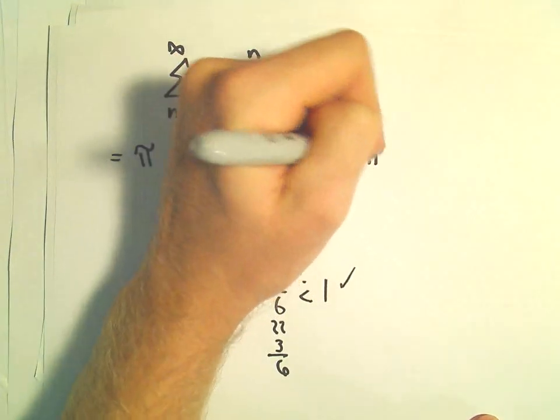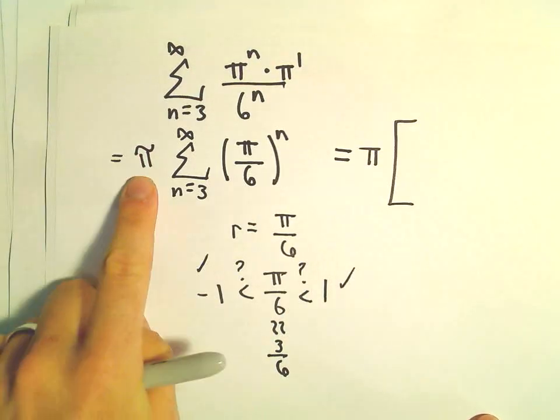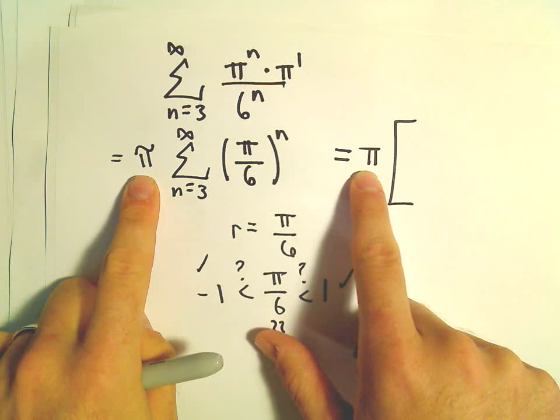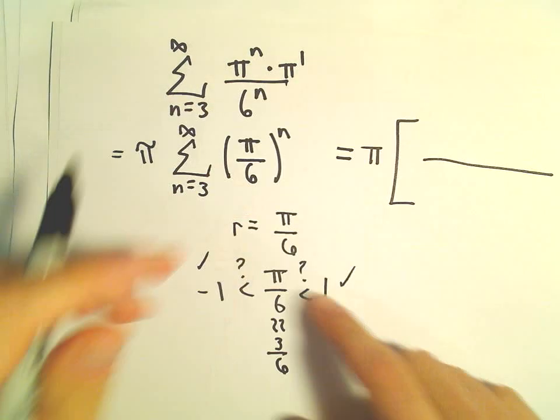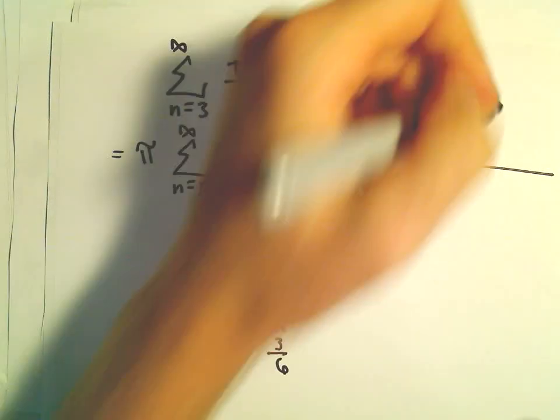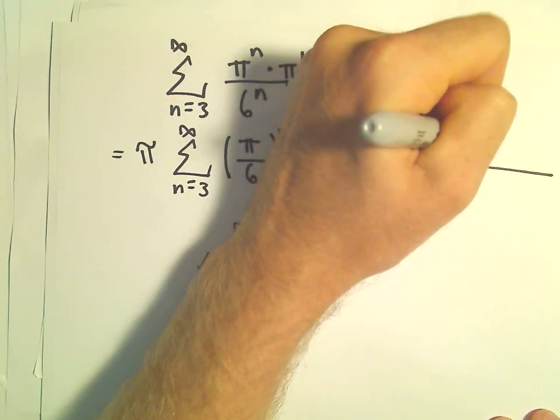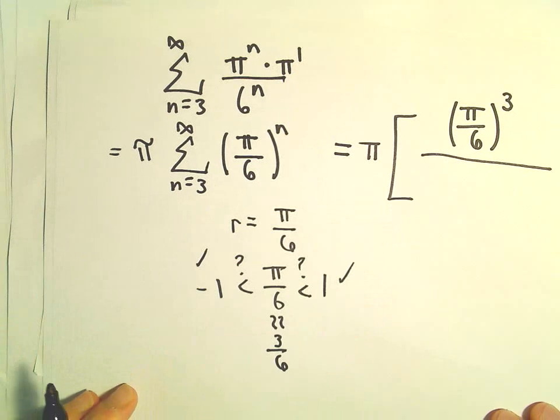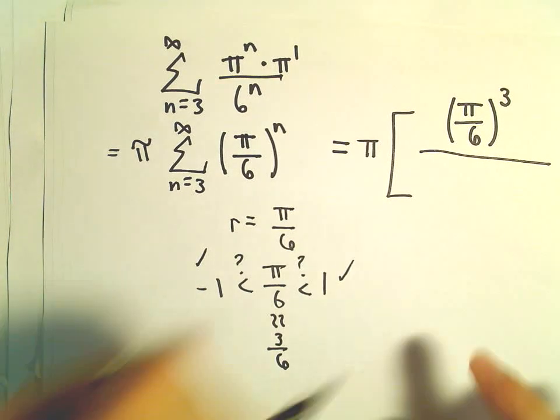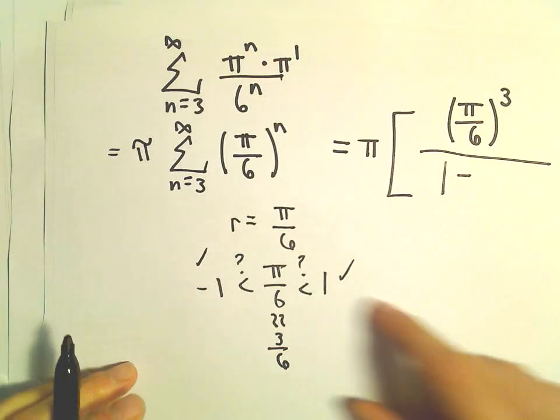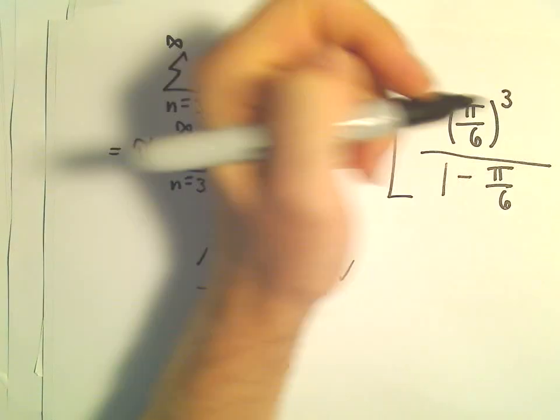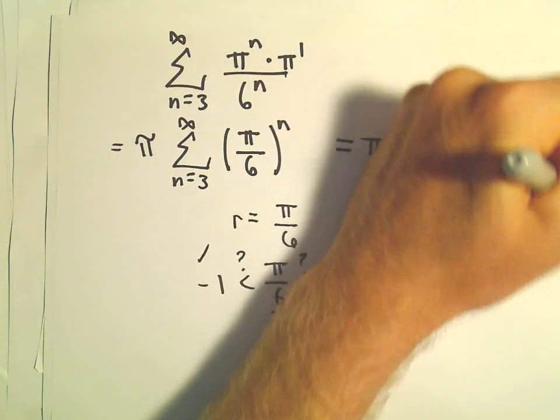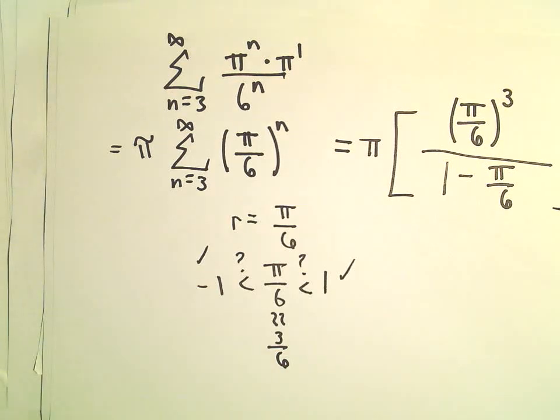So we'll have pi times, again, just the pi from out front. It says the first term, so our first term in this case, we'll have to plug in n equals 3. So we'll get pi over 6 raised to the third power. That would be our first term. And then we just have 1 minus our r value, which is going to be pi over 6. And that's going to be the sum in this case.